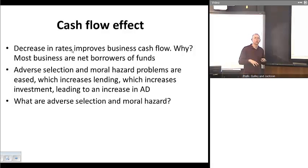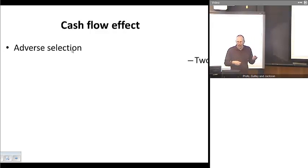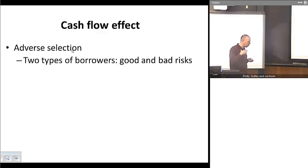Now, to fully understand this, we need to figure out, well, what the heck is adverse selection and what the heck is moral hazard? Well, adverse selection is all about the type of people who show up to a bank or other financial institutions looking to borrow money. So what we can do is put these folks who show up looking to borrow money into two buckets, people who are good risks and people who are bad risks.